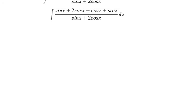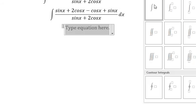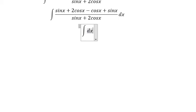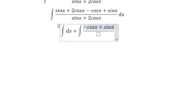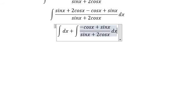So sine x plus cosine x divided by sine x plus 2 cosine x gives us number one, and that corresponds to the dx. The integral of dx gives us x.